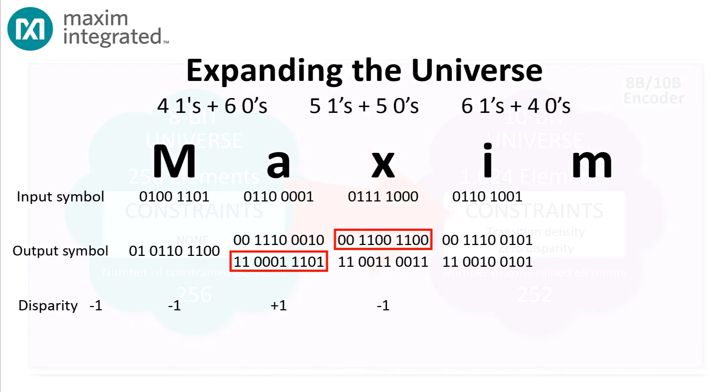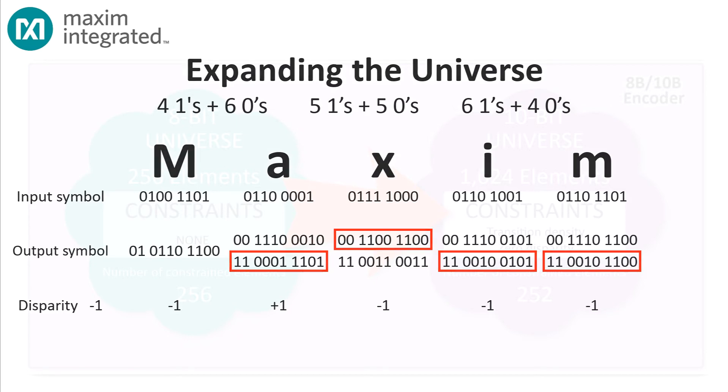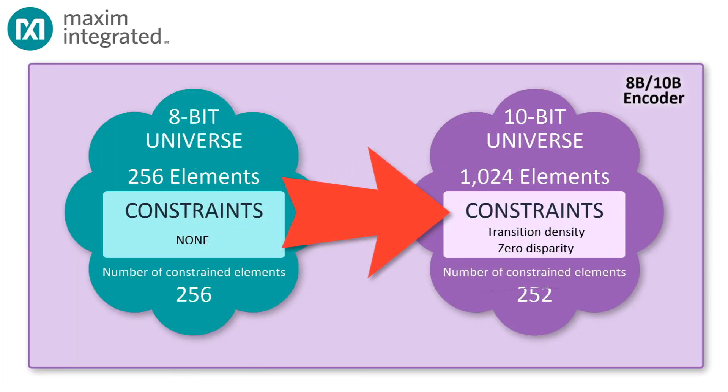And interestingly, the disparity will never be precisely 0, but it will alternate around 0 at a distance that's never greater than 1.